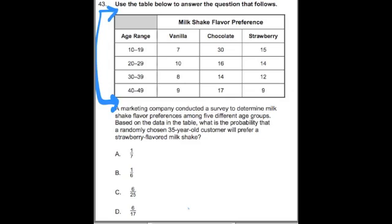Key words that stick out in this problem: first of all, 'table' — we want you to be able to look at this table and read it correctly. Another key word is 'probability.' Probability checks the likelihood of an event happening.